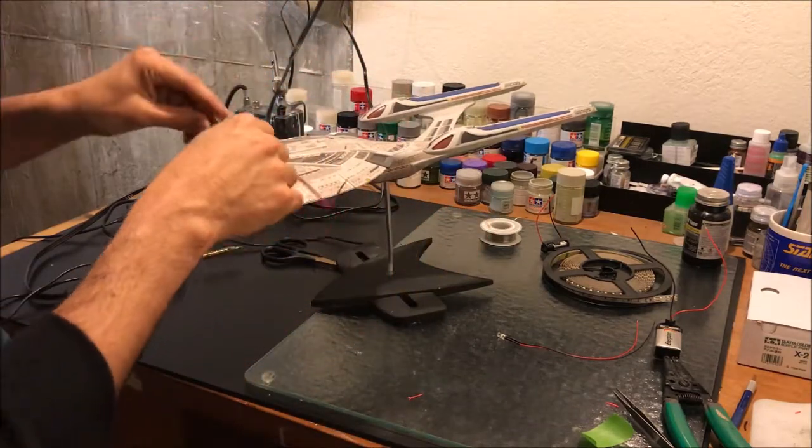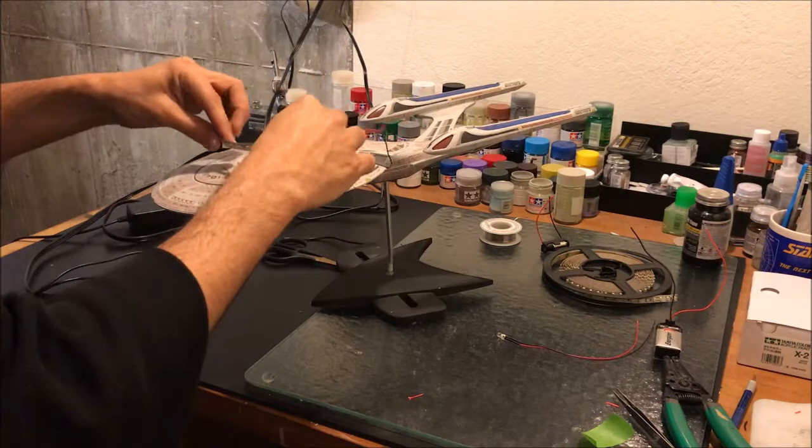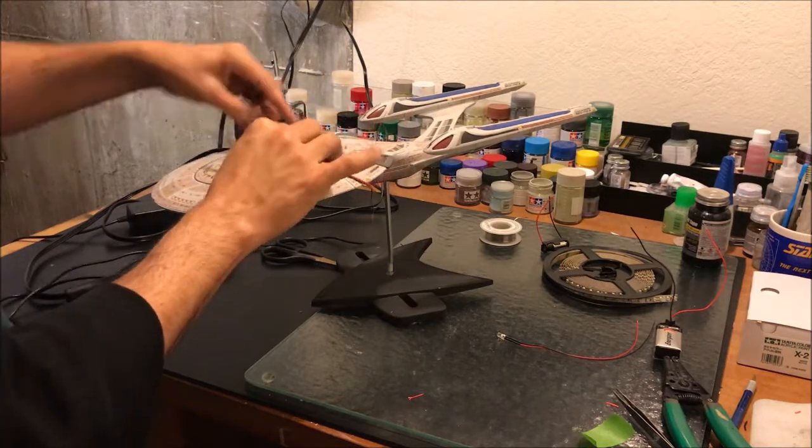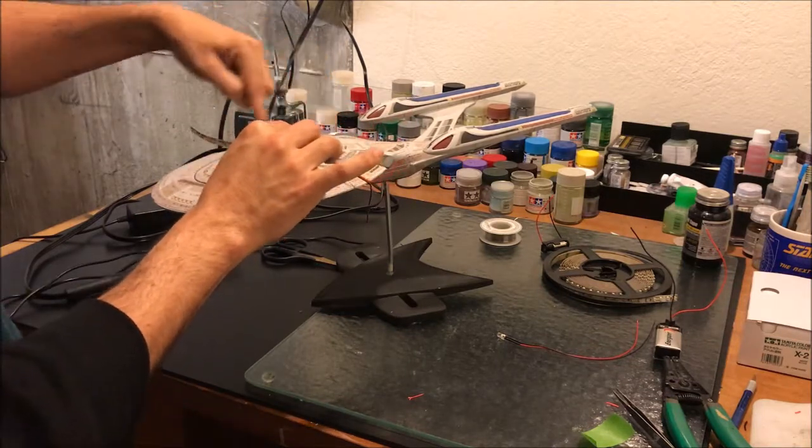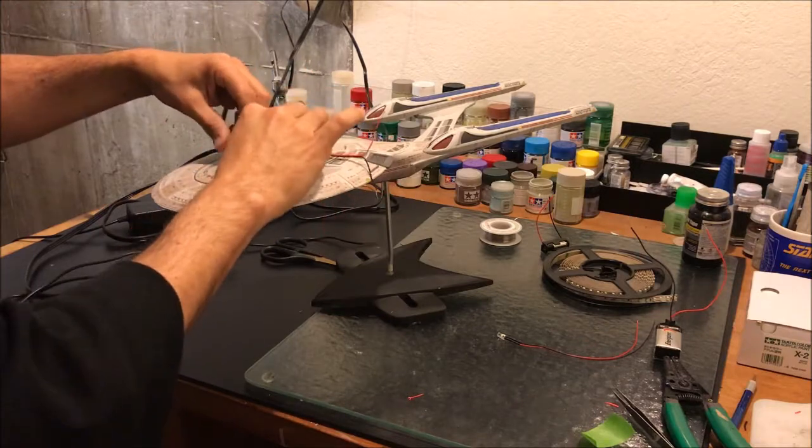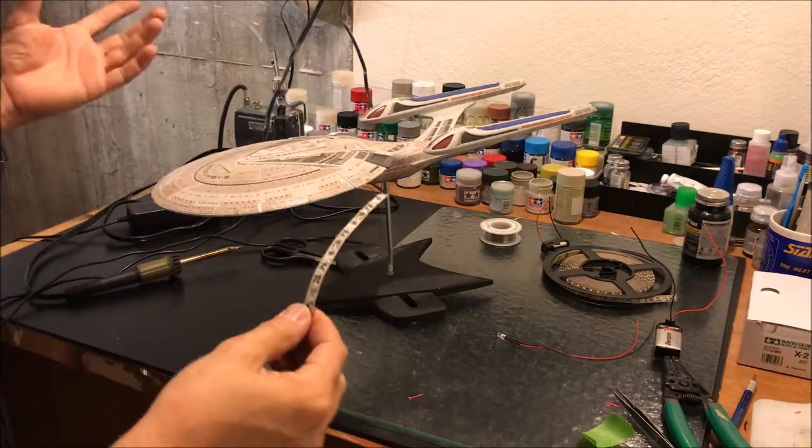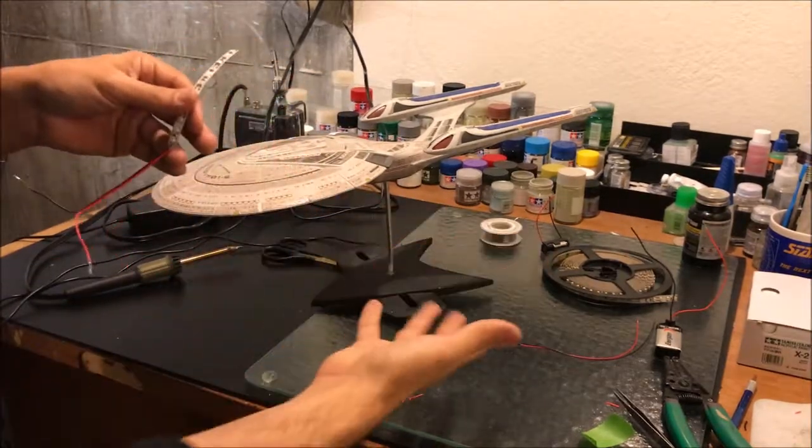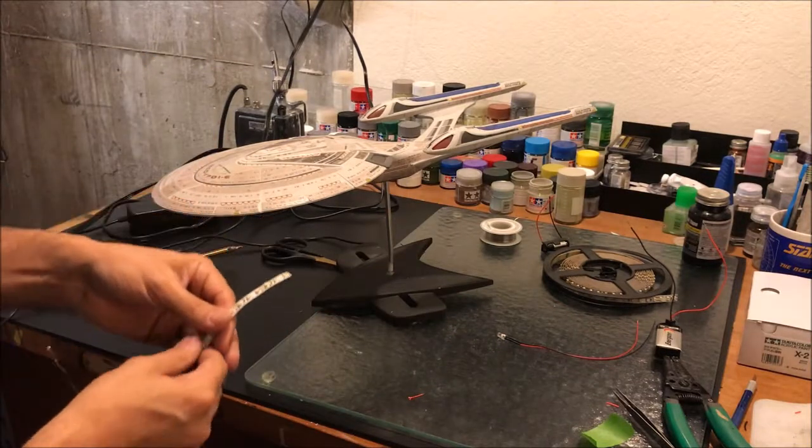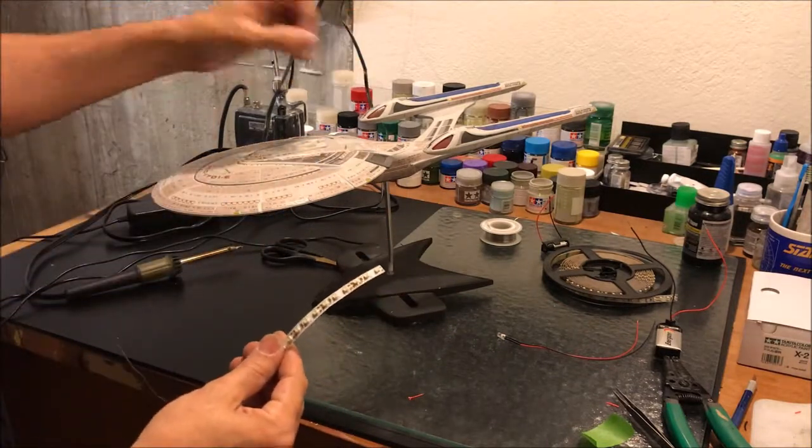And in this saucer section, I've got an LED strip about twice as big. It's right around here in a horseshoe to light up the entire saucer. So I really just did that soldering job that you just saw me do about four times: twice for the nacelles, one for the body, one for the hull.